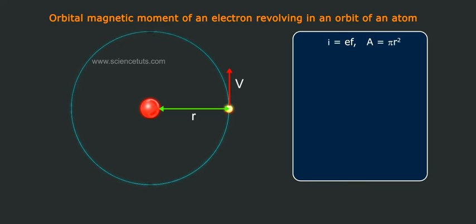M equals EF pi R square. Therefore, M equals E omega pi R square by 2 pi, equals